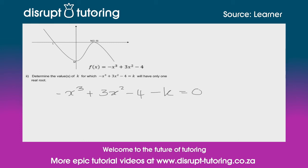Now they've said to us determine the values of k for which this will have only one real root. At the moment, how many real roots does the function have? Well, we've got one over there and we've got one over there, so that means it has two real roots currently.